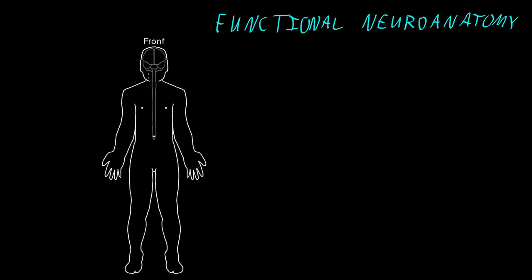The structure of the nervous system is divided up into two main parts. The first is a part called the central nervous system — I'll just write CNS for central nervous system — and that's mostly made up of the brain here inside the head, and the spinal cord inside the spine. We call that part the central nervous system.